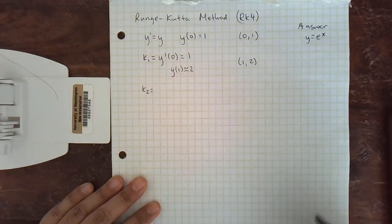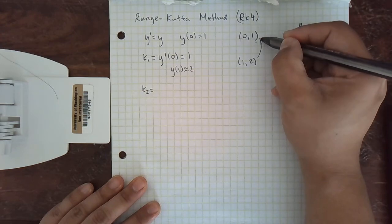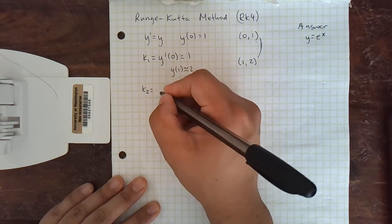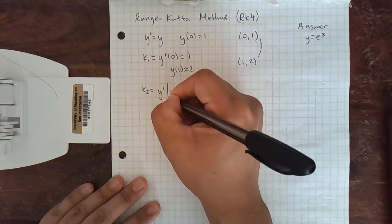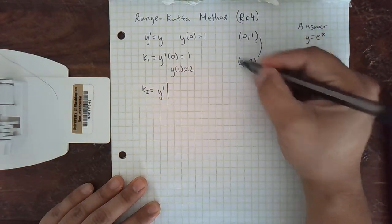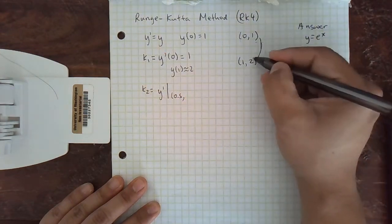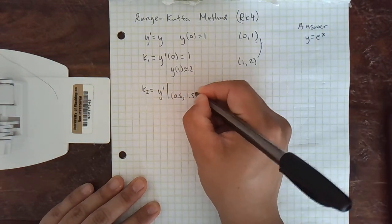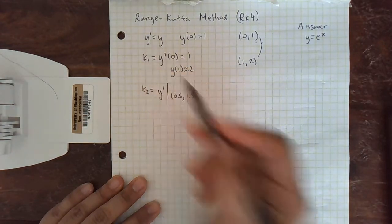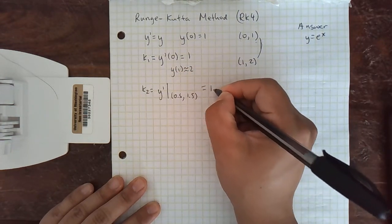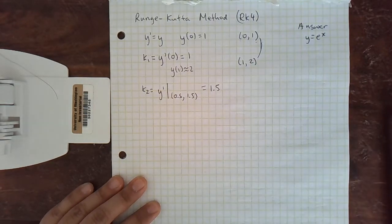k2 is now going to take the midpoint. So we're going to take a slope, y' evaluated at exactly the midpoint of those two points. So 0.5 and then halfway between 1 and 2 is 1.5. And y' is y, so ours is easy. But sometimes you might have to do a more complicated calculation here. So your k2 is going to be 1.5.